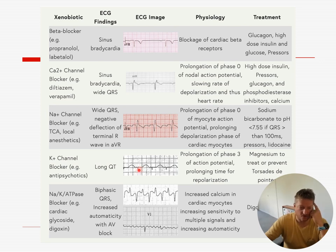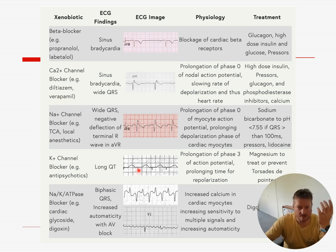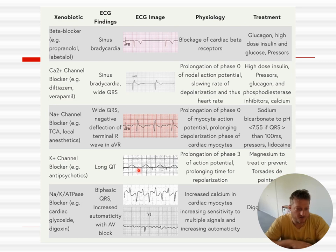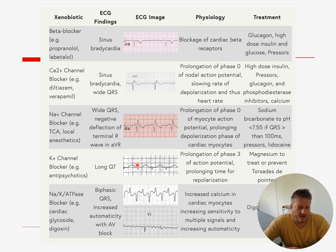Many drugs which prolong the QT, like quetiapine, also cause tachycardia — and tachycardia is actually relatively protective in long QTs. It's the ones which slow the heart rate and prolong the QT that are most worrying. That's why sotalol can be very dangerous — the longer the gap between QRS complexes, the more likely you are to have a PVC, and you can get R-on-T phenomenon, which can result in torsades.